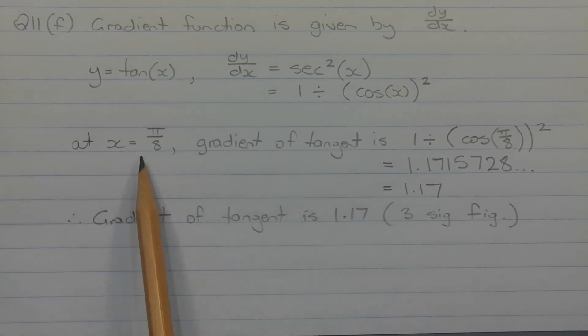At x equals pi over 8, the gradient of the tangent is one divided by cos pi over 8 squared, which equals 1.1715728 and so on, which rounds to 1.17 correct to three significant figures.